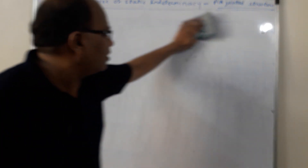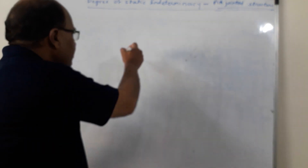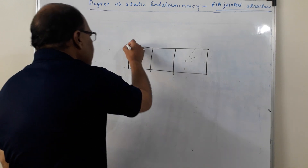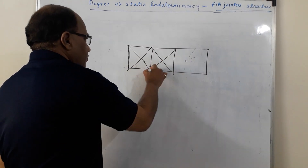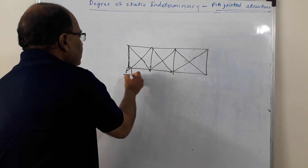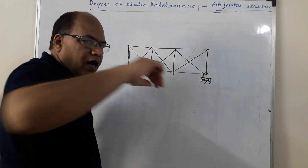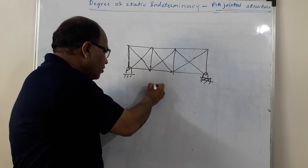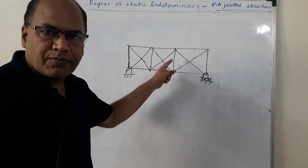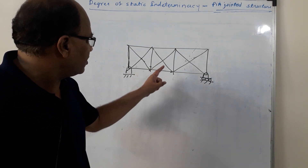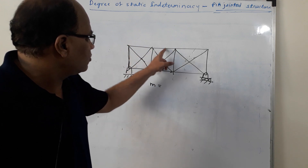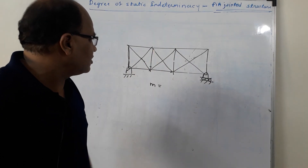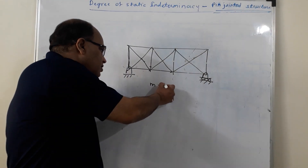Consider a plane truss structure where all joints are pin joints and we are asked to find the statical indeterminacy. First, calculate m — the actual number of members provided. Counting: horizontal members are 6, vertical members are 4 (total 10), and inclined members are 6. So the total number of members m = 16.